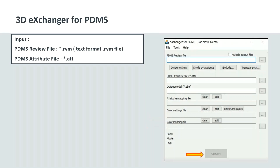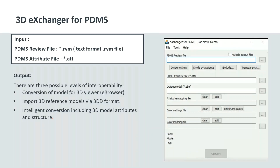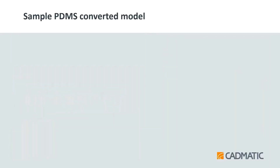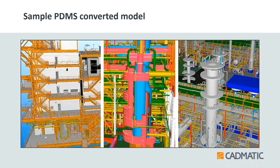You attach the attribute file, set the output path and file name, then configure the attribute mapping file and color setting file. The attribute mapping automatically maps by default, but you can further configure it — for example, to set color per PDMS, per system, per site, or per zone. Once complete, click the convert button. The output is a CADMATIC Review file opened in the E-Browser application, a .3dd file usable as a reference model, with options to intelligently map existing attributes, color system, and hierarchy from the source software.